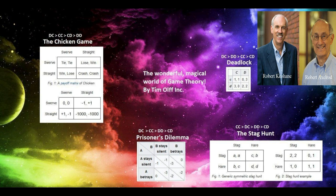The four models are the prisoner's dilemma, chicken, the stag hunt, and deadlock. Each game is a scenario where the player must choose between two options: cooperating with the other player, or defecting — in effect betraying them. The row shows the first player's choice, and the column shows the second player's choice.